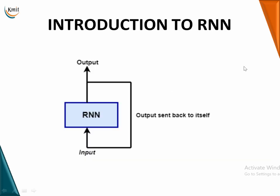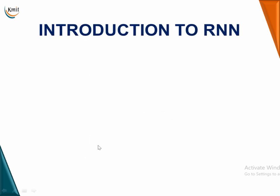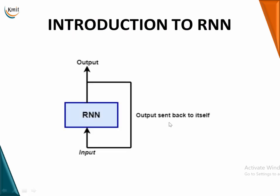This is a simple block diagram: in a normal neural network you have an input and an output, but in an RNN there is a feedback — the output is sent back to itself. That's what makes it an RNN, and how it is built is what we are going to see.